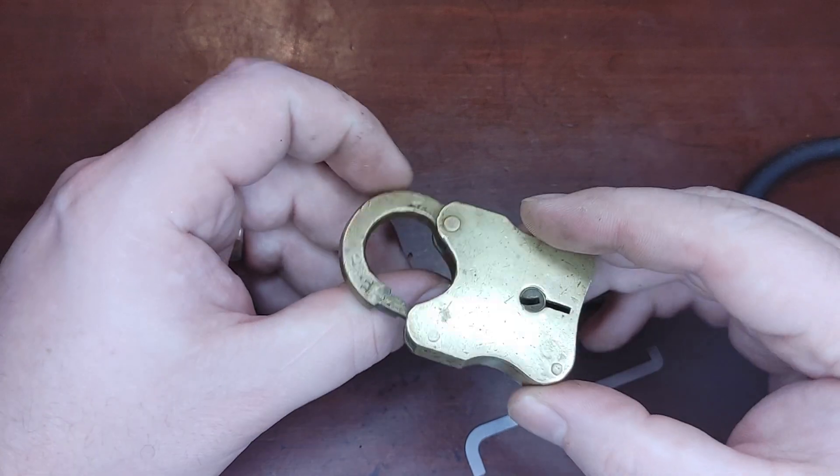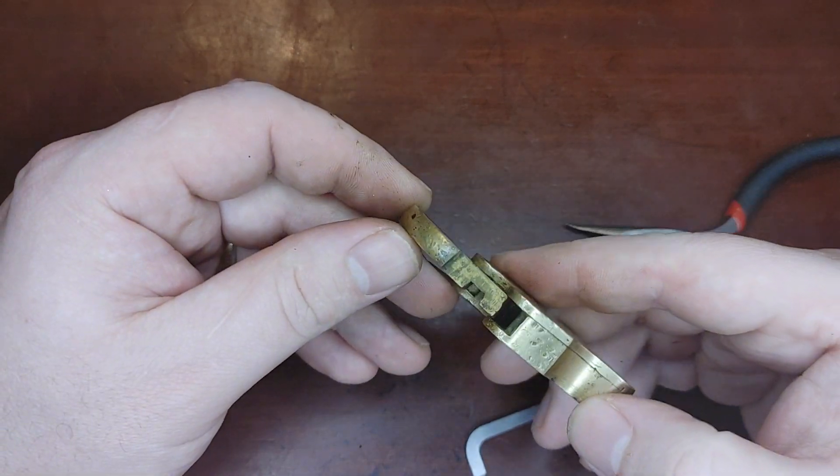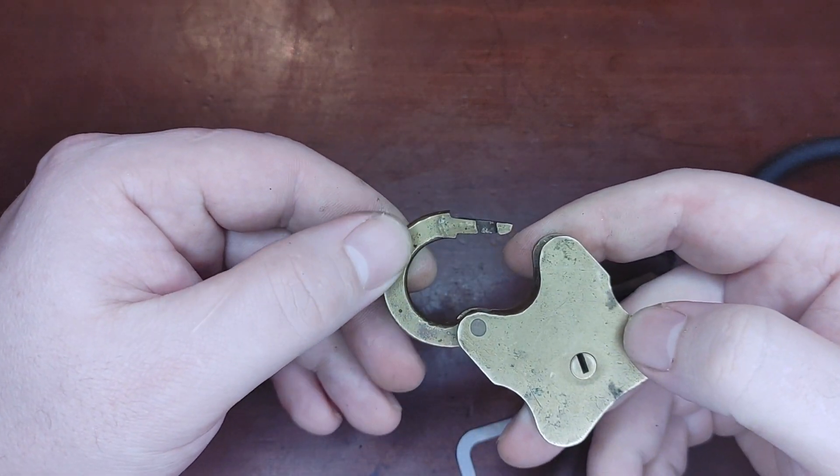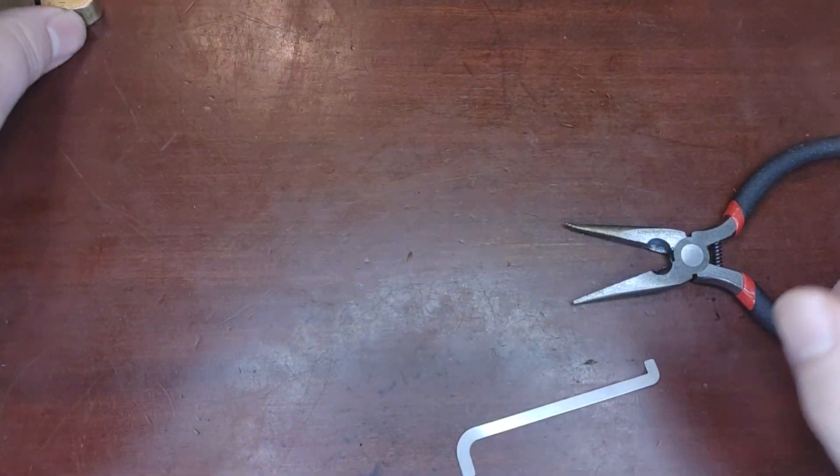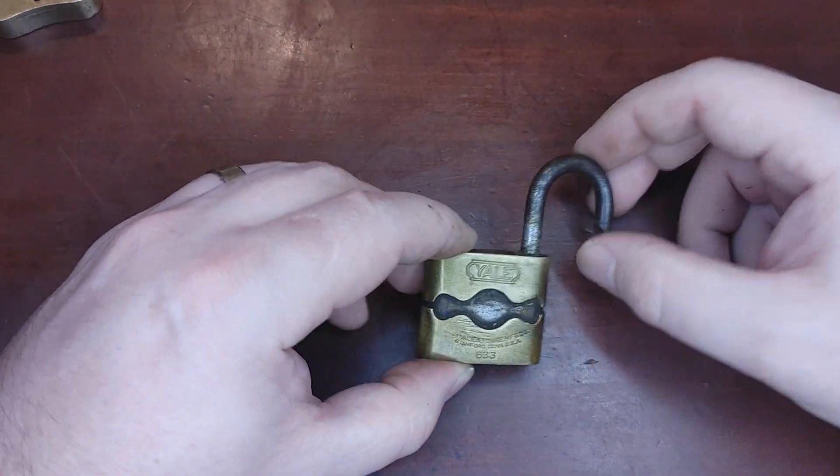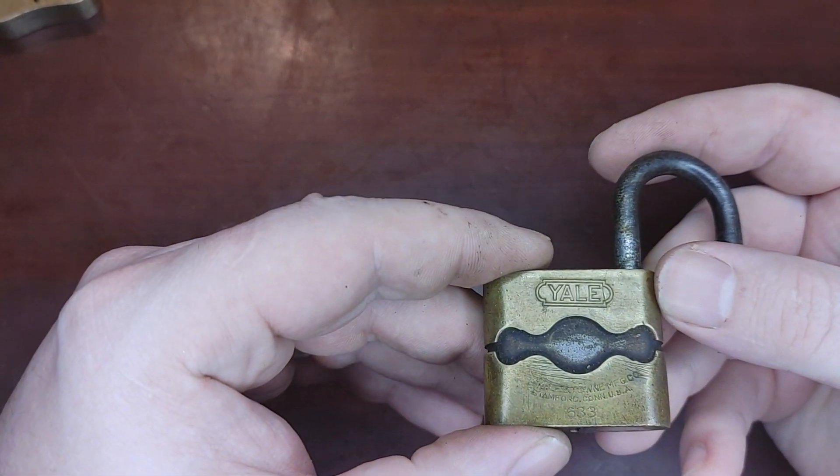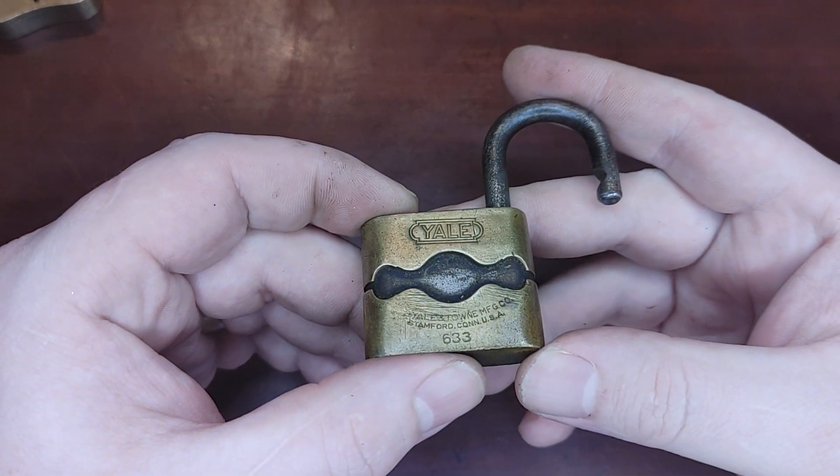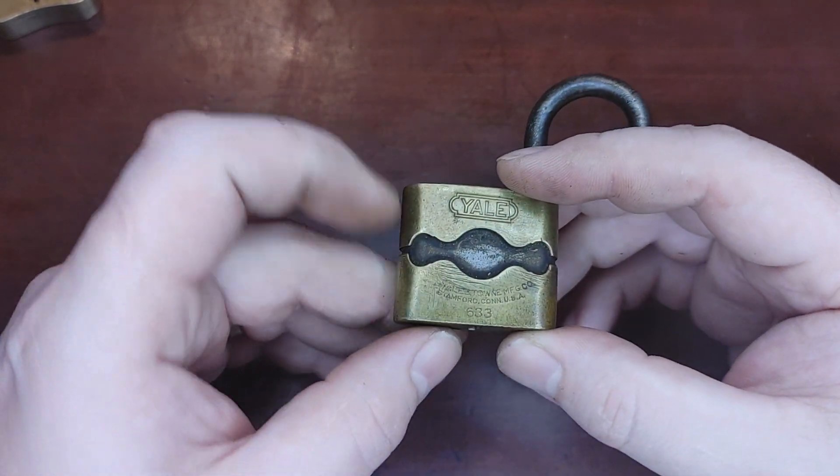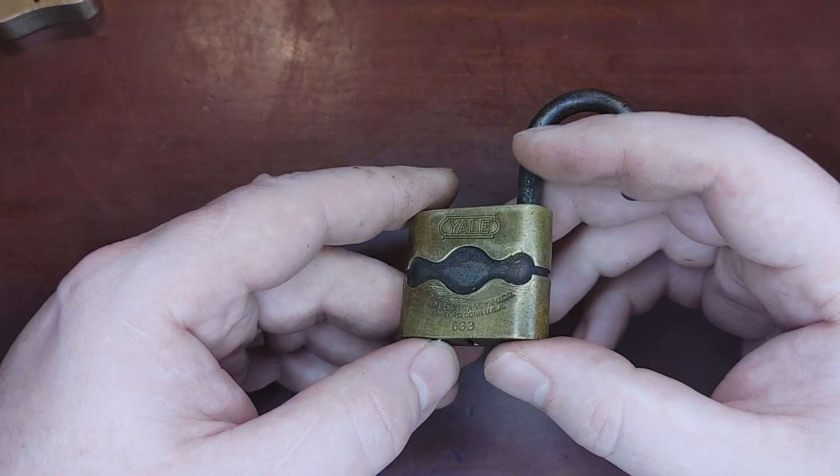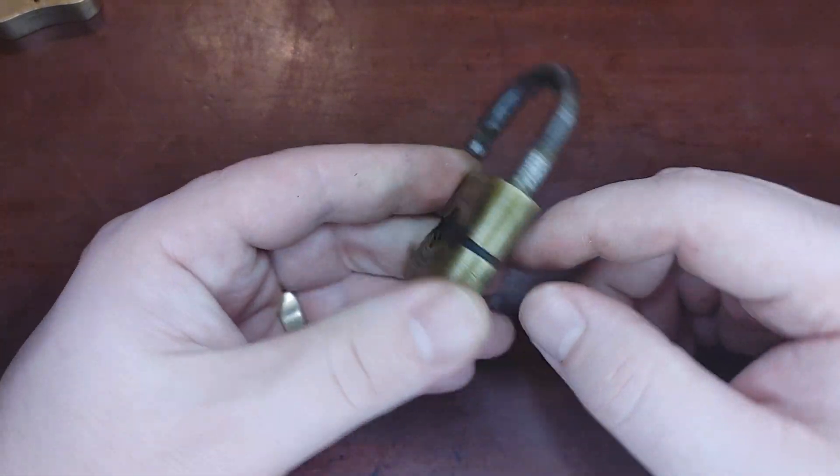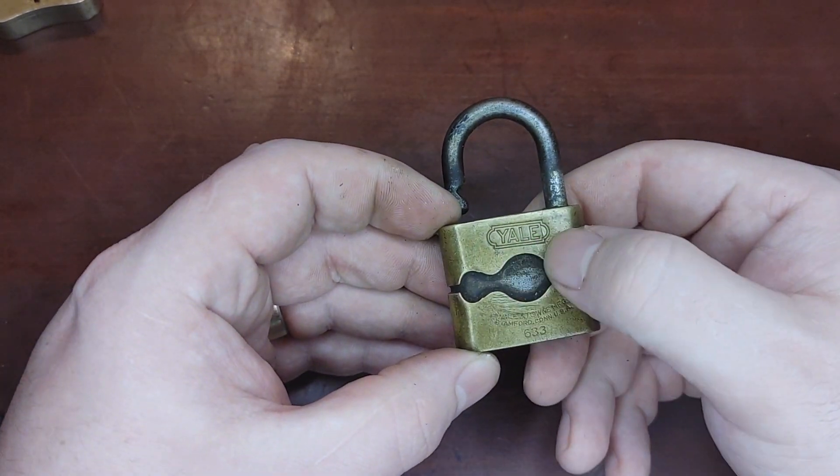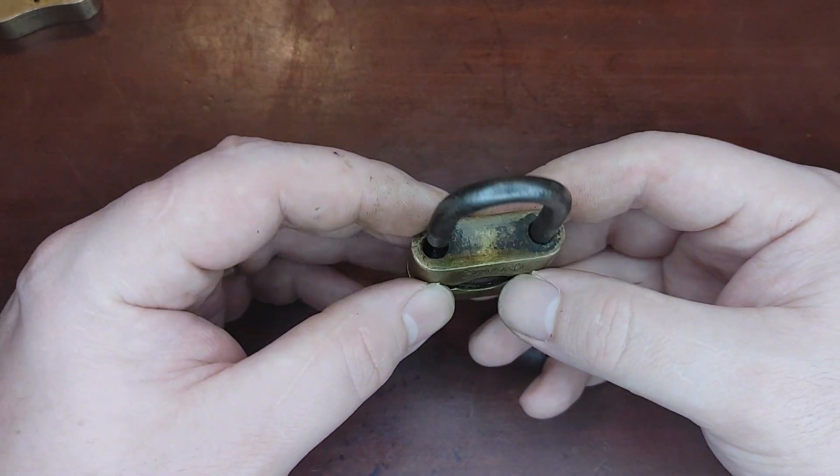And then the last one we have here is this Yale 633. I had to look around a little bit online for this. There's also a 635 that looks very, very similar, and there's another one that uses the same mechanism that has Fidelity written on it that I believe was also made by Yale.